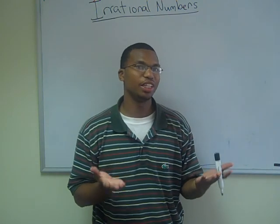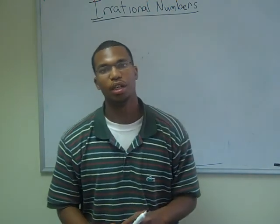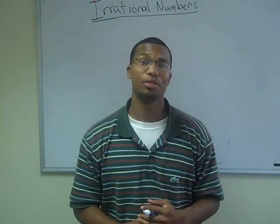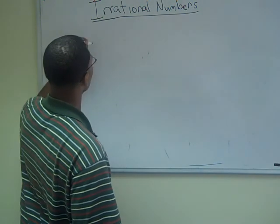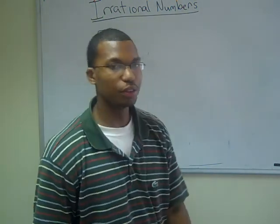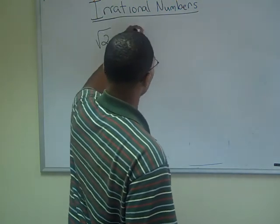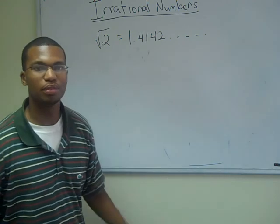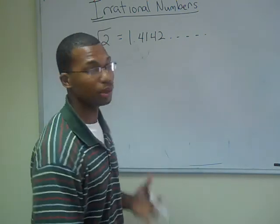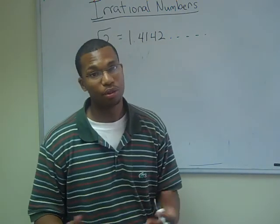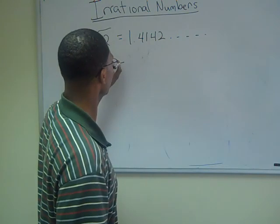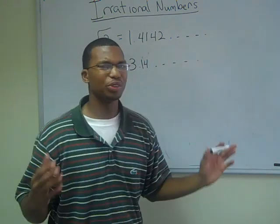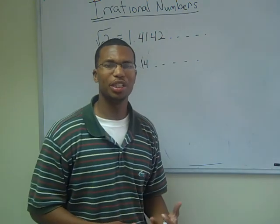So since rational numbers terminate, do irrational numbers terminate? No, irrational numbers do not terminate. Those numbers can go on to infinity and not have any pattern in particular. So let's look at some examples of irrational numbers. Let's look at the square root of 2. Now the square root of 2 is equal to 1.4142 and some numbers that do not hold a particular pattern. So the square root of 2 would be an example of an irrational number. Another number would be pi. Pi is equal to 3.14 and some numbers that do not hold a particular pattern. So pi would also be an example of an irrational number.